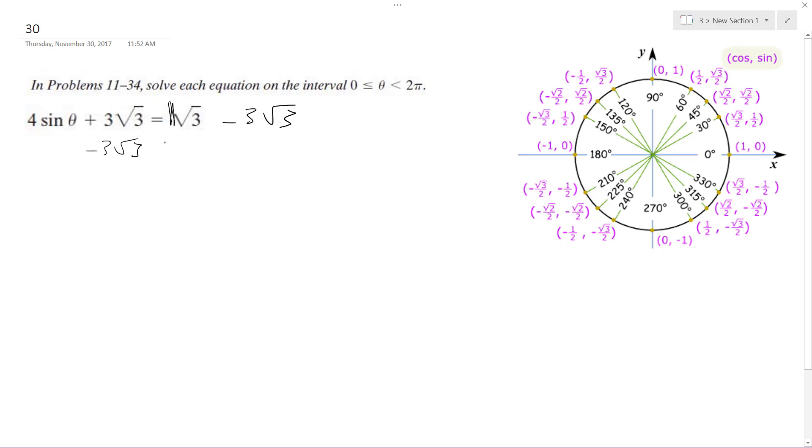Think of this as having a coefficient of 1. So we get 4 sine theta is equal to negative 2 root 3.